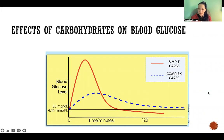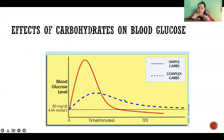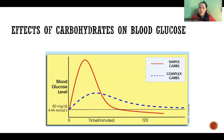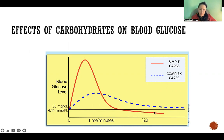Comparing simple carbs and complex carbs: when we eat complex carbs, because they're gigantic molecules and we have to break off glucose one bond at a time, we get a slow release of glucose into the bloodstream. With simple carbohydrates, we get an immediate spike that then falls back to normal. Thank you so much for watching, and I'll see you in the next video.